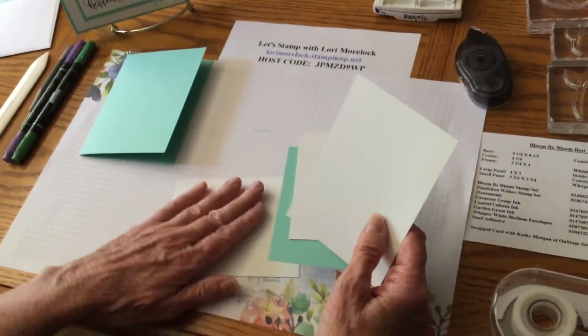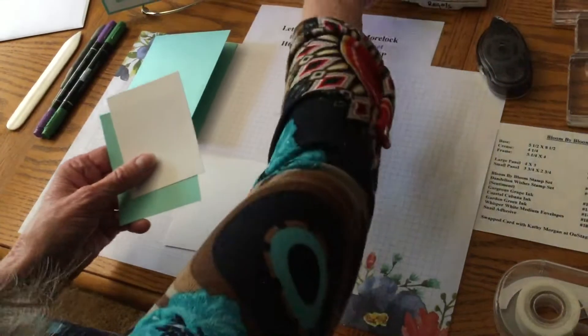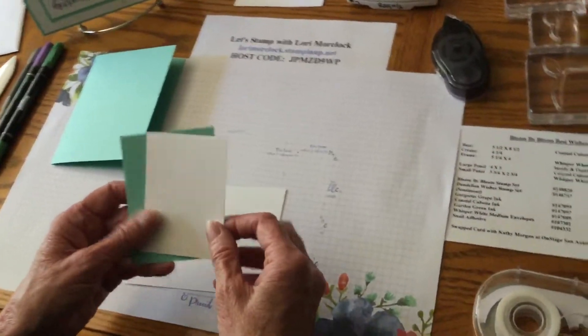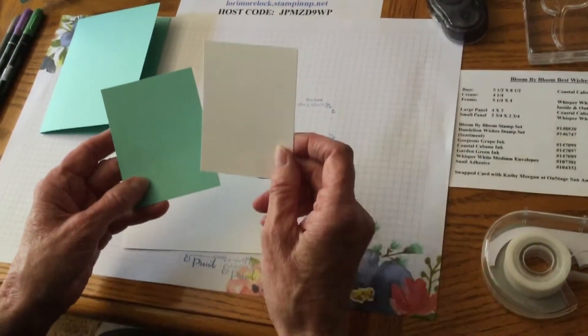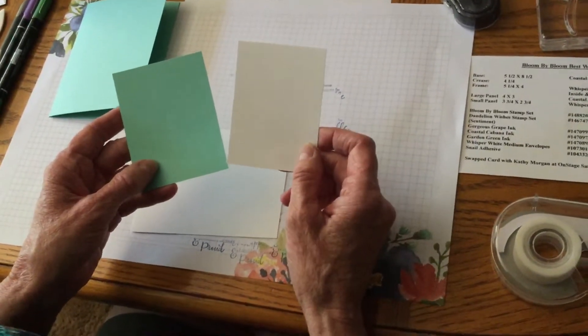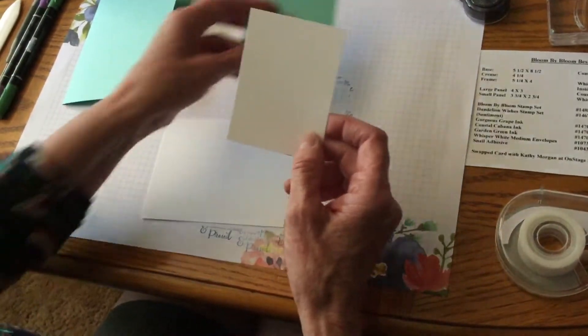So one of these I'm going to use on the outside, the other is for the inside. Now I'm also going to use Whisper White, 3 3/4 by 2 3/4, and this is going to be our small panel.